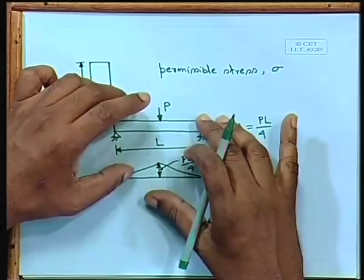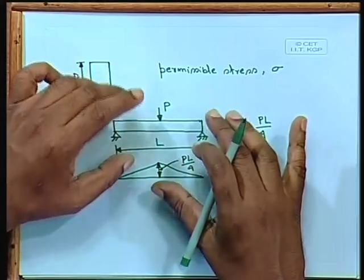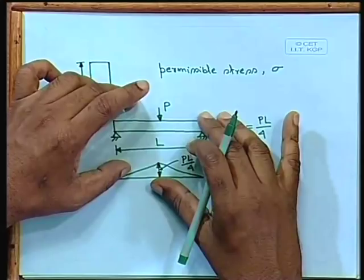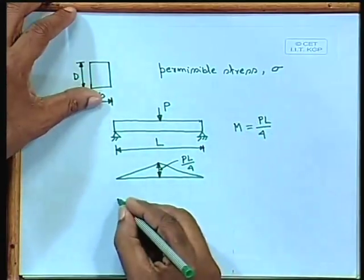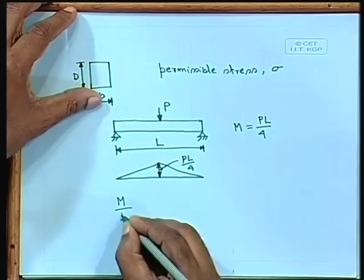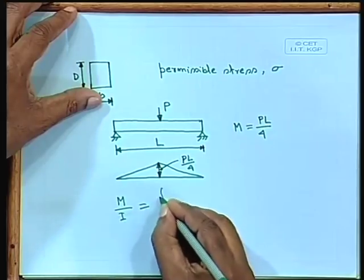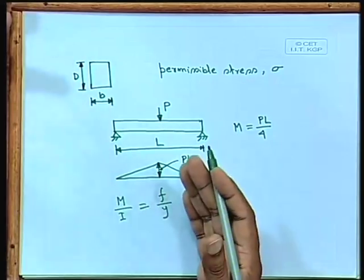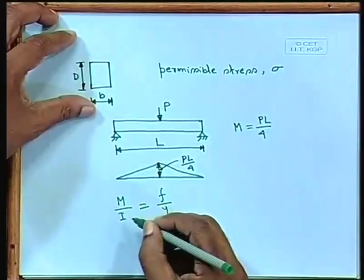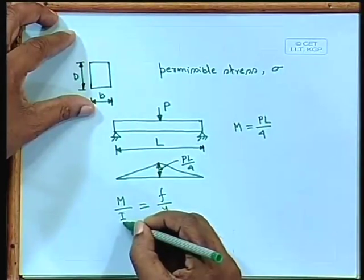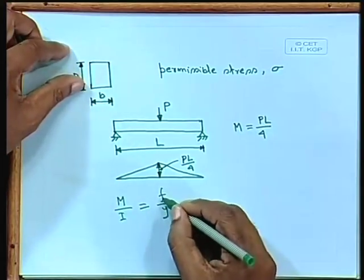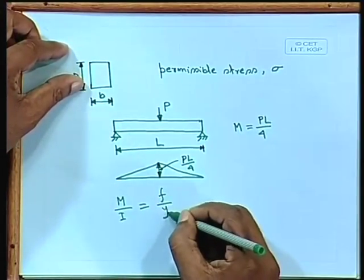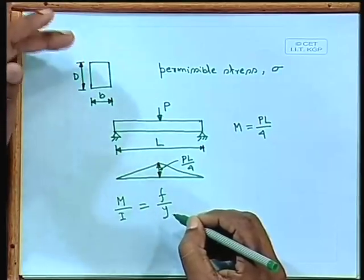Since the beam is governed by bending, we use the flexure equation M/I = F/Y, or sigma/Y. M is the moment, I is the moment of inertia (second moment of area), F is the stress, and Y is the distance from the neutral axis to the point where we find the stress. From the neutral axis, stress is zero at the axis and maximum at the outer edges.